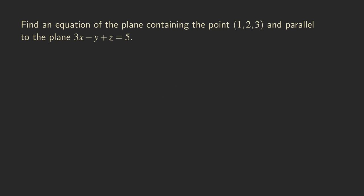Hello everyone, it's Wilson here. Today I want to talk about how to find an equation of the plane containing a point, and also parallel to another plane. When we want to find an equation of a plane, we actually need two things: one is the point that the plane contains, and the other is the normal vector to the plane — that's the vector that's perpendicular to the plane.